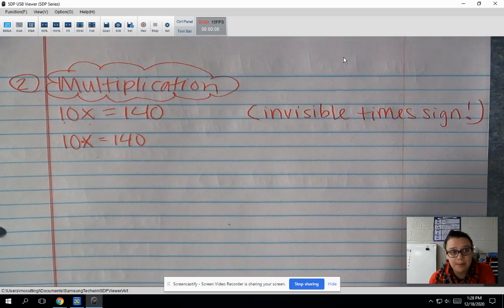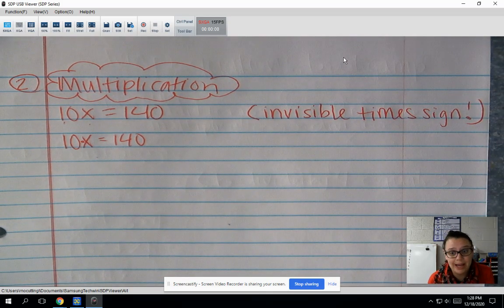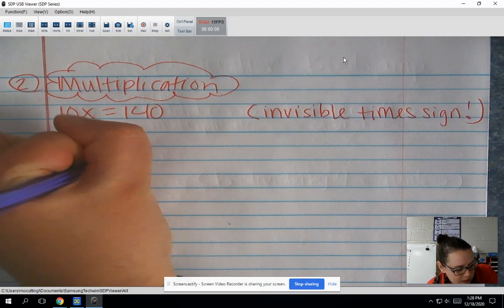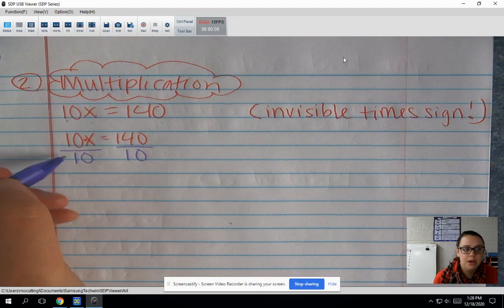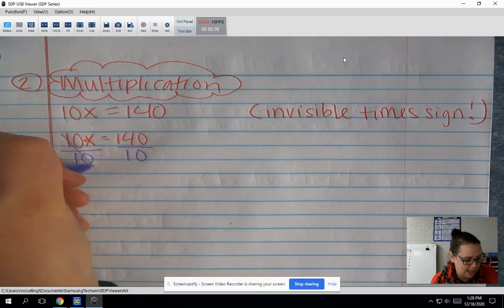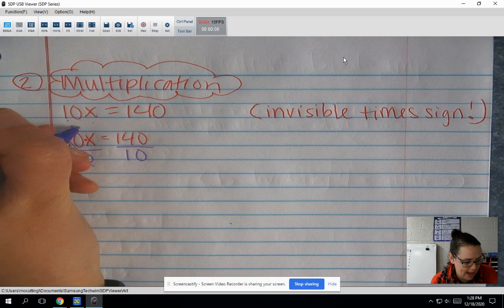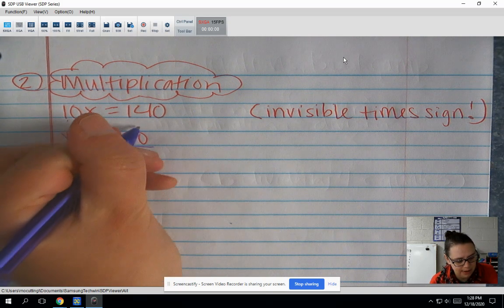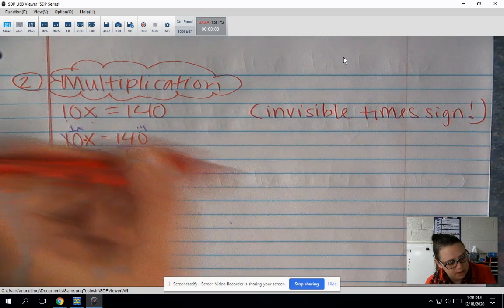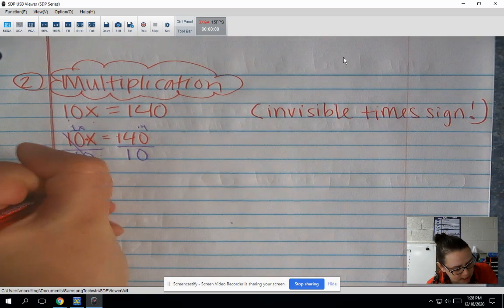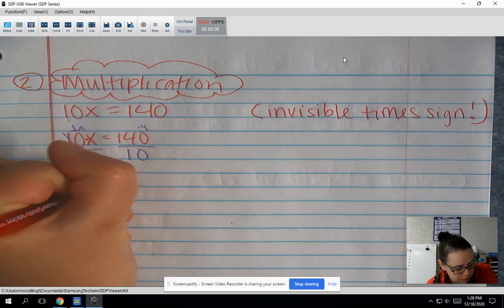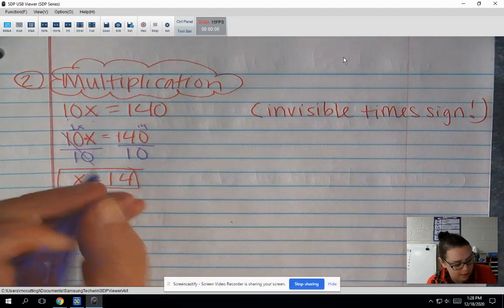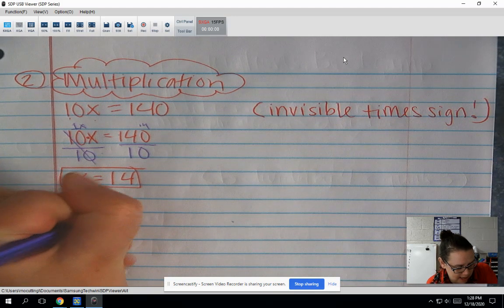So they multiplied. So to undo that multiplication, we need to do the opposite on both sides of our equation. So we need to go divided by 10. Divided by 10. So 10 divided by 10, that's going to cancel out. That's just going to give me a 1x. And then 140 divided by 10, that gives me 14. So 1x is just x, and 140 divided by 10 is 14.